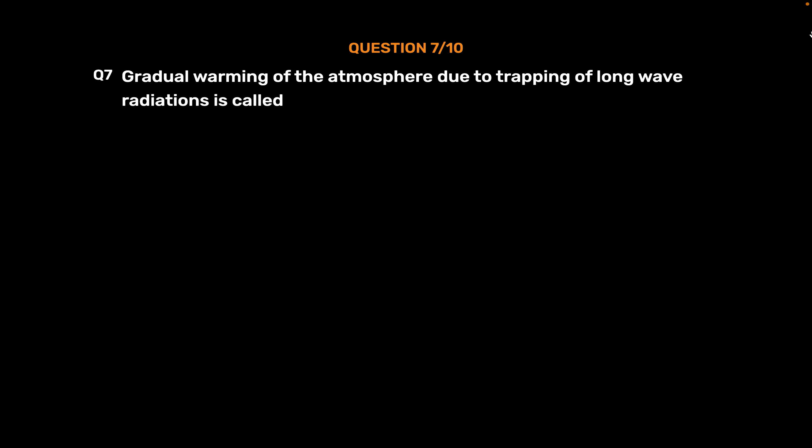Question number 7: Gradual warming of the atmosphere due to trapping of long wave radiations is called. Option A: Air heating. Option B: Photosynthesis. Option C: Air pollution. Option D: Greenhouse effect. The correct answer is Option D: Greenhouse effect.